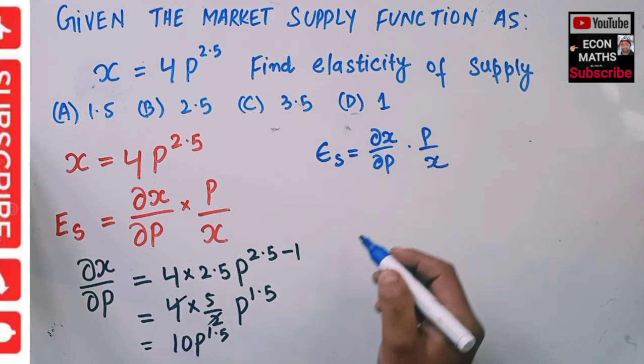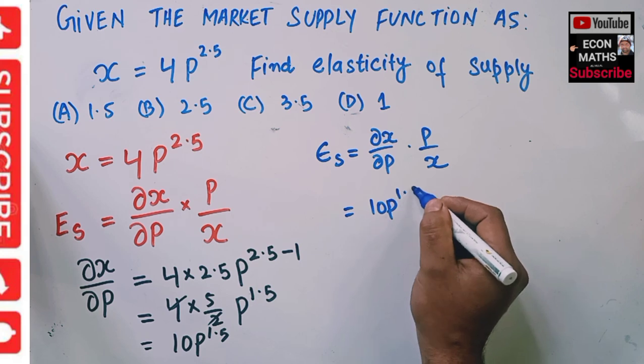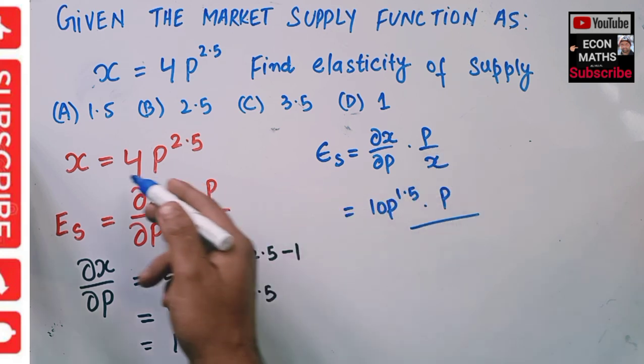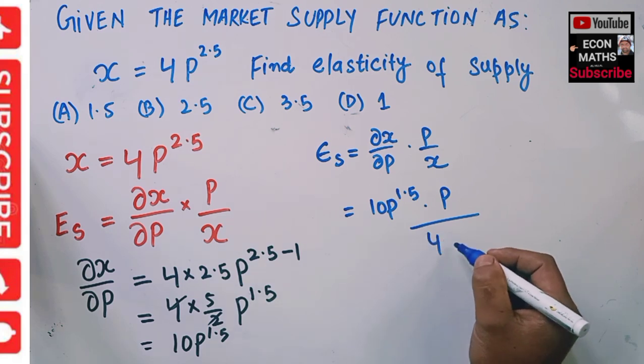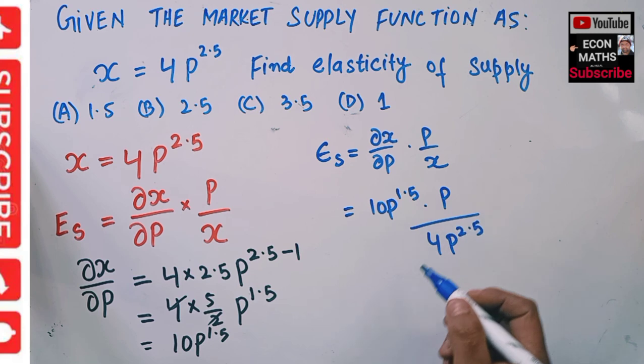dX/dP we calculated is 10P^1.5, times P, and our X is given as this supply function, which is 4P^2.5.